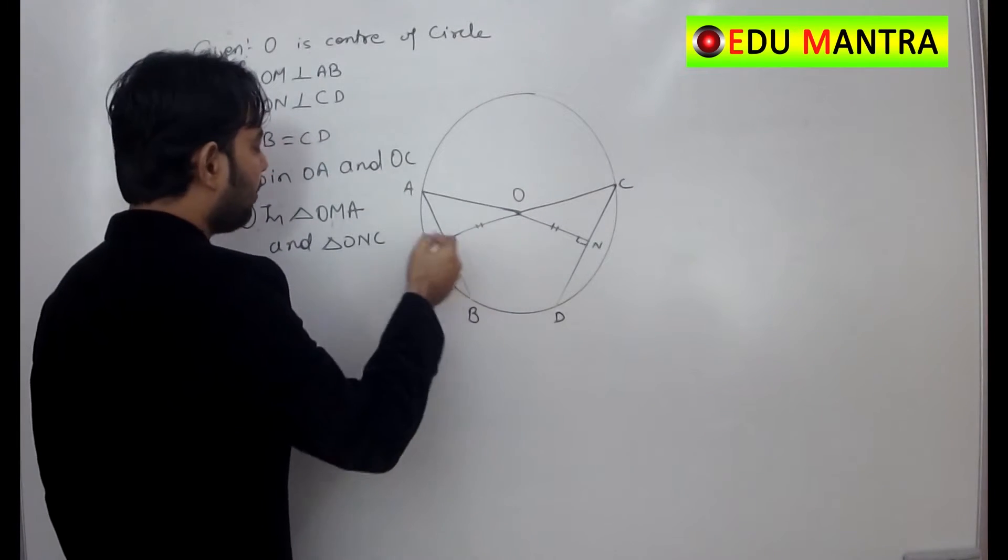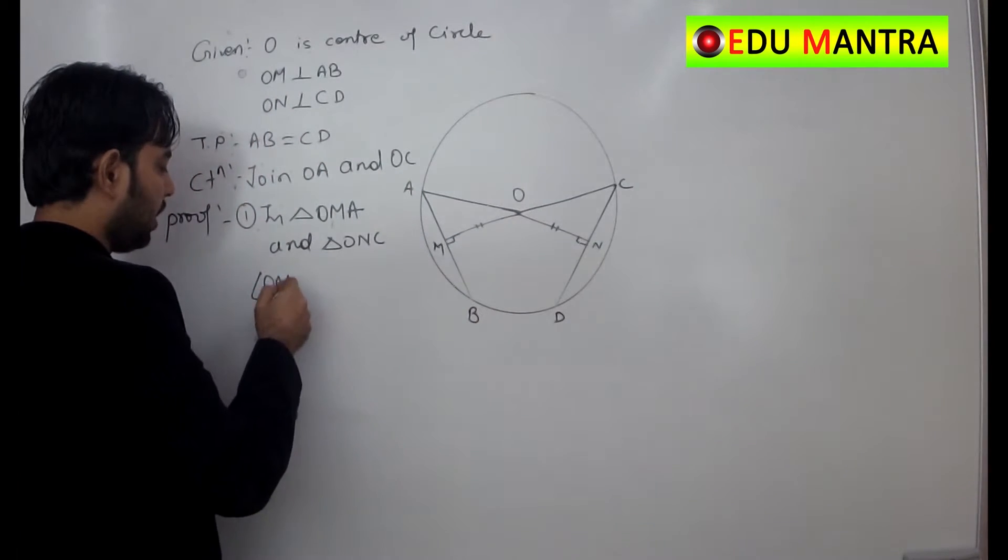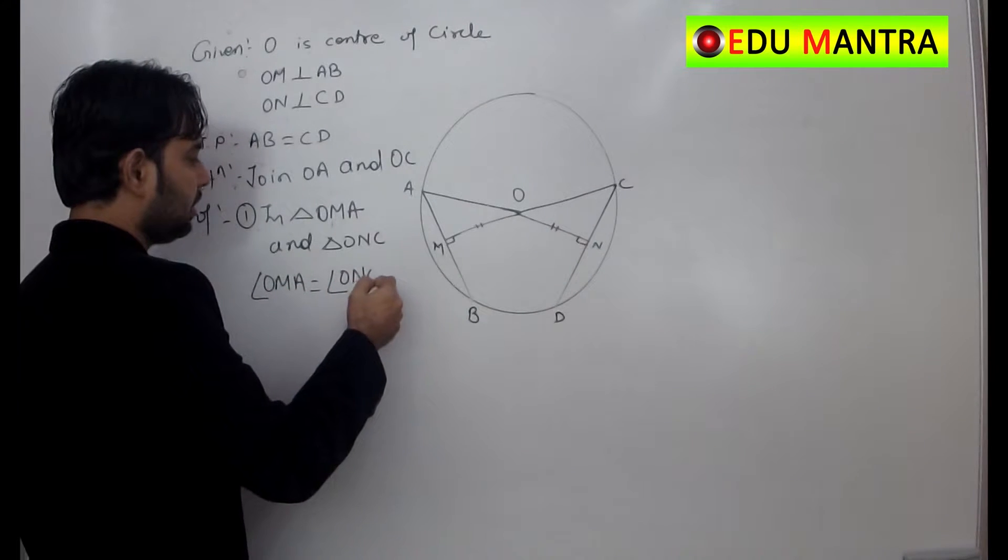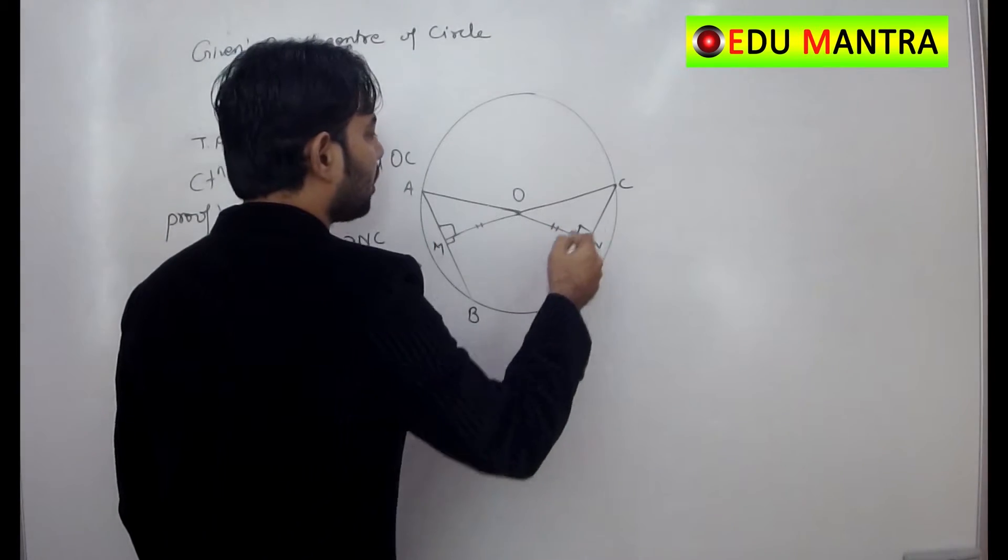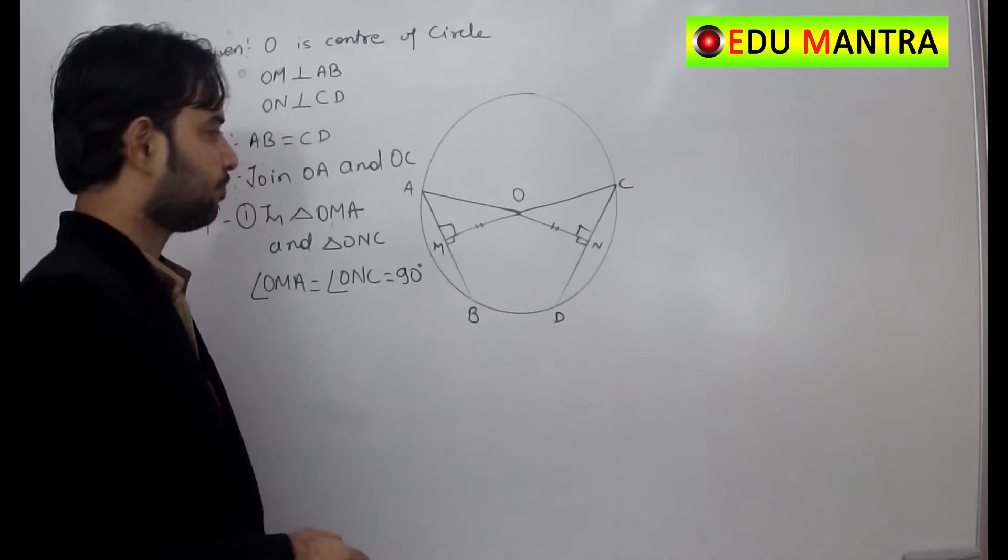Angle OMA is equal to angle ONC. Each is what? 90 degrees. Both are of 90 degrees.